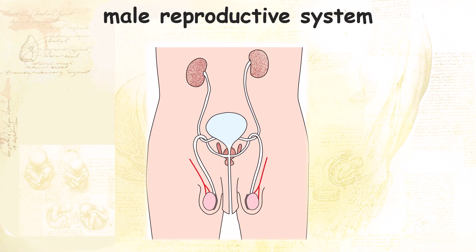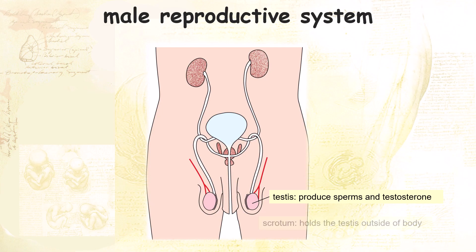Let's start the labelling from the testis, where the male gametes — sperms — are produced. The male hormone testosterone is also produced here. The scrotum is the skin that holds the testis outside of the body to keep it at a lower temperature, which is needed for the proper development of sperm.